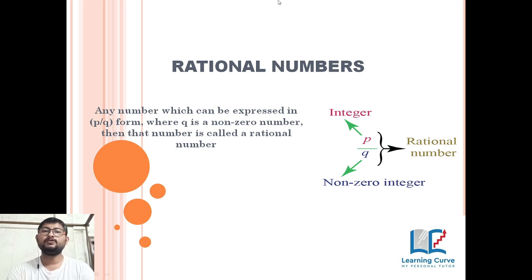Where q is a non-zero integer or a non-zero number, that is a rational number p by q. The denominator - what is the requirement? The denominator cannot be zero.